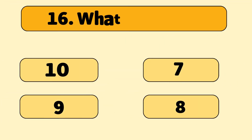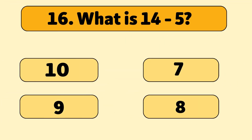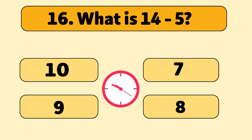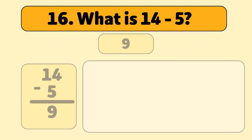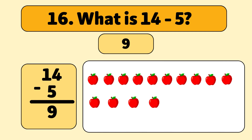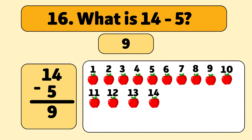What is 14 minus 5? The answer is 9. We start with 14 apples and take away 5. Let's count: 1, 2, 3, 4, 5. We have 9 apples left.